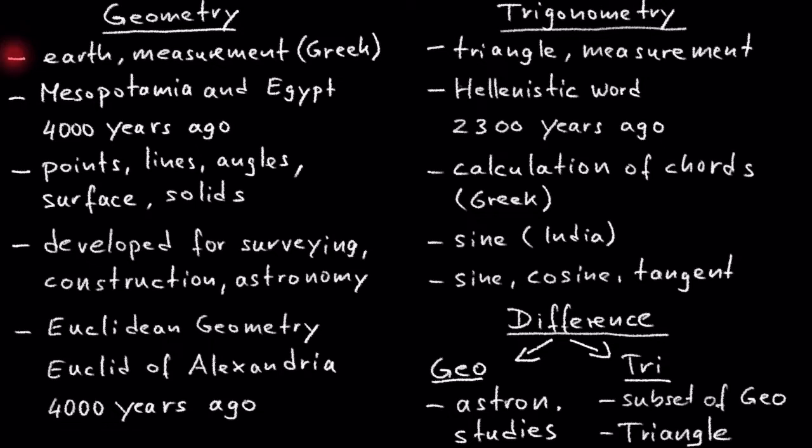Did you know that the word geometry comes from two Greek words meaning earth and measure? It can be traced back to ancient Mesopotamia and Egypt from 4,000 years ago.